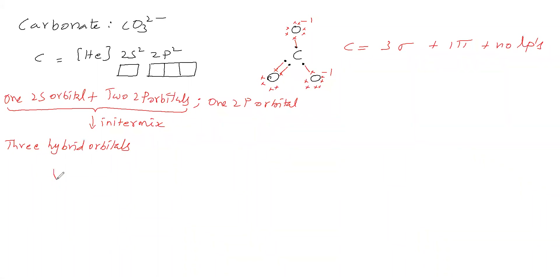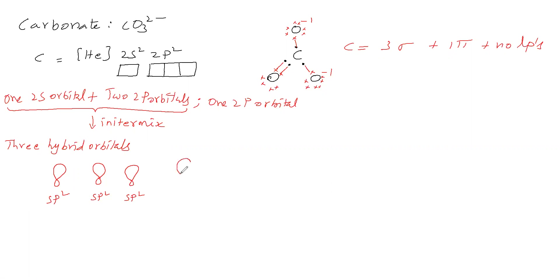Each sp² hybrid orbital has one big lobe and one small lobe. Three sp² hybrid orbitals are drawn. One pure 2p orbital is not going for hybridization — it is needed for pi bonding.